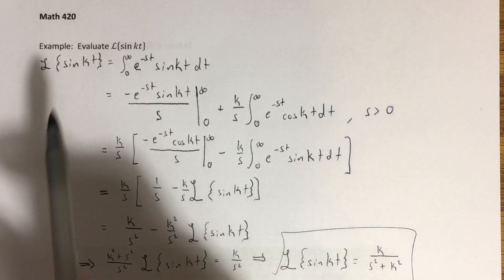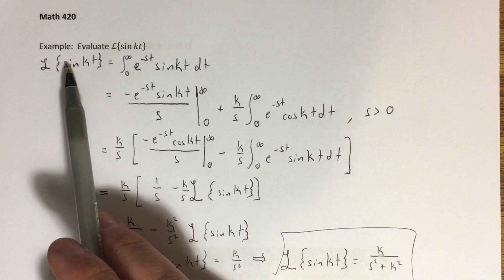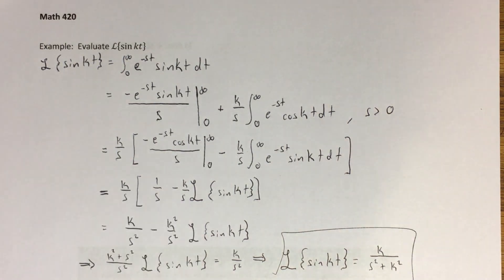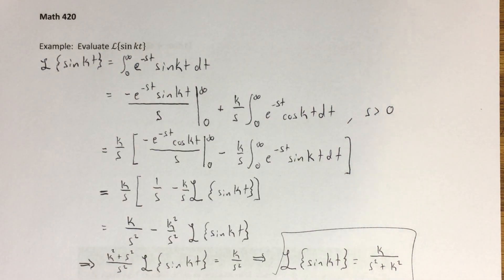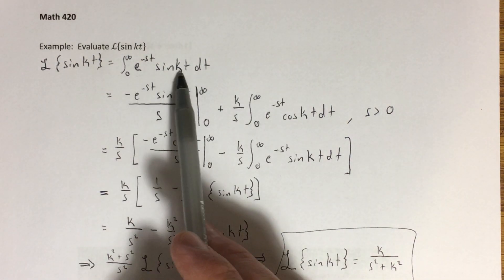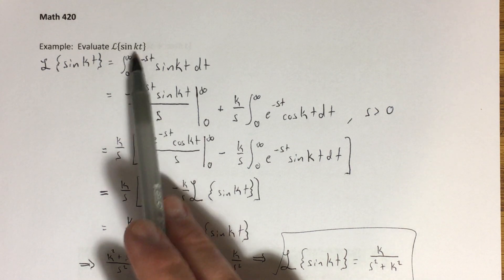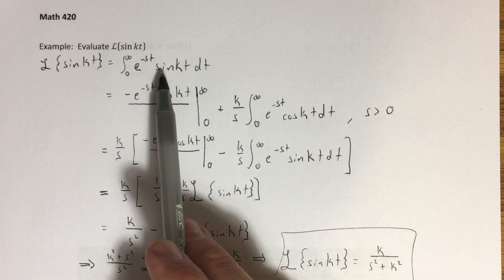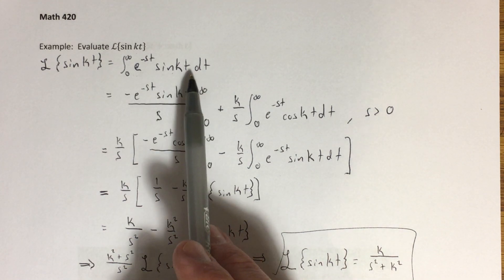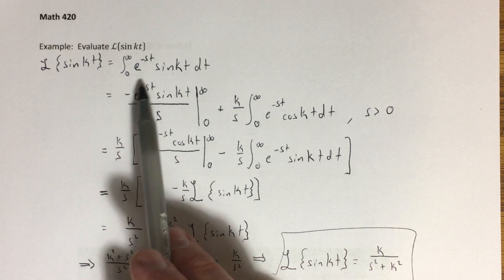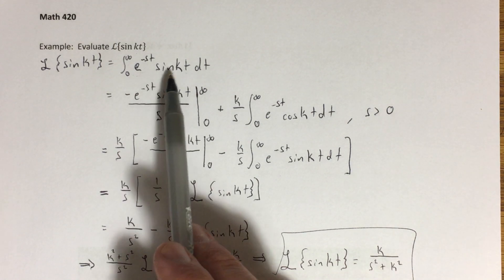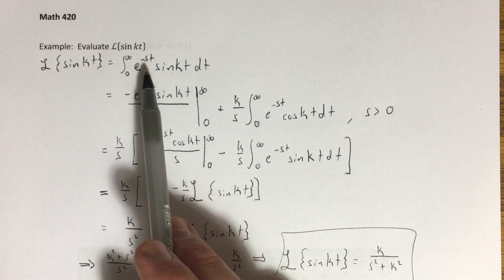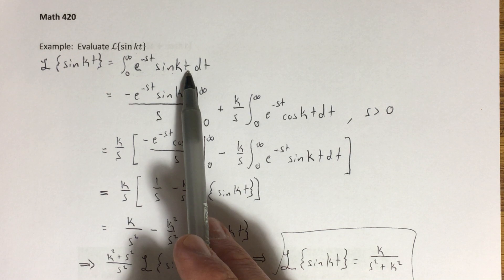We're doing one more Laplace transform. This time the function is sine of kt, where k is just any constant. By definition, that would be the integral from zero to infinity of e to the negative st times sine of kt dt. This is pretty easy to see would require integration by parts.